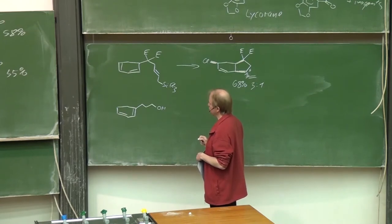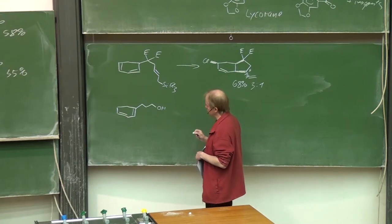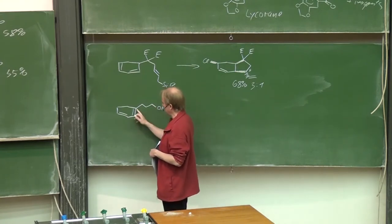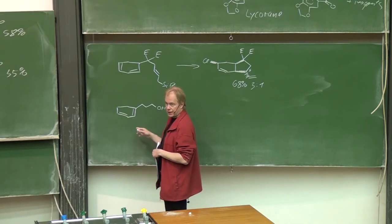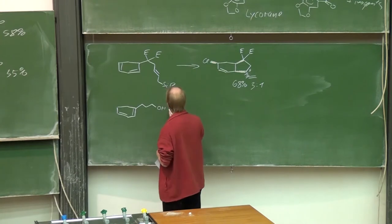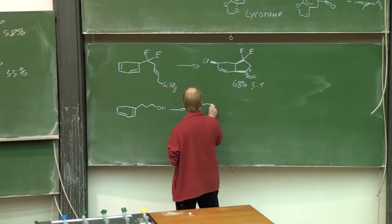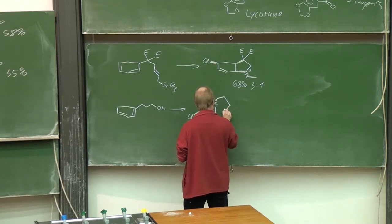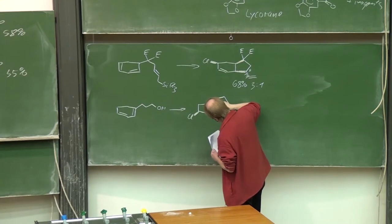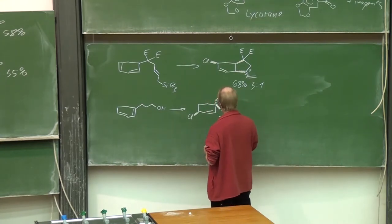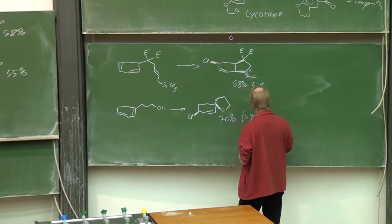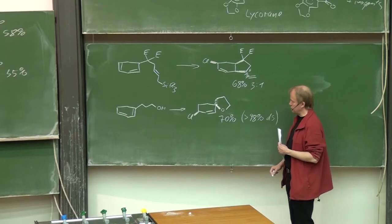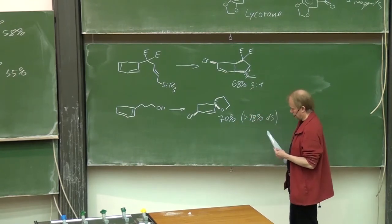So here the difference to the examples we studied before is that the tether starts adjacent to that diene. And you're right. Then the spirocycle should be formed. This is indeed the case. 70% yield and 98% diastereoselectivity in favor of this diastereoisomer.